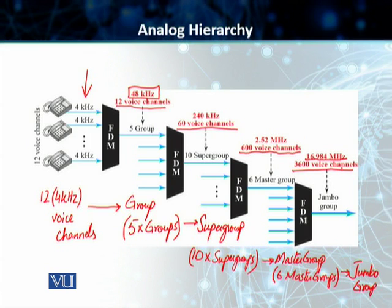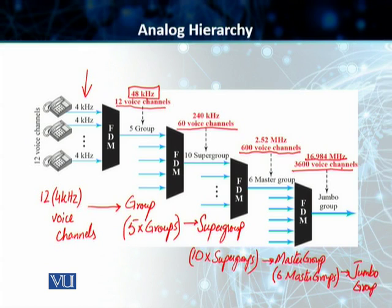There are some other examples of the different applications of frequency division multiplexing. One of them is AM radio. Another one is FM radio. But the most common one is the multiplexing of the different telephone analog voice channels by using these analog carrier systems and this analog hierarchy.